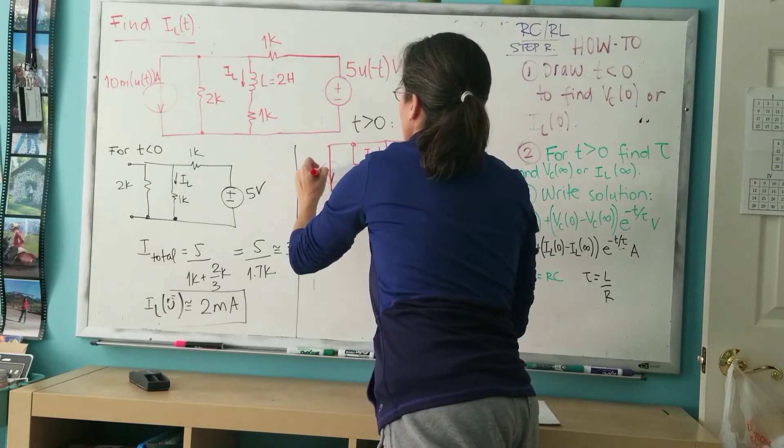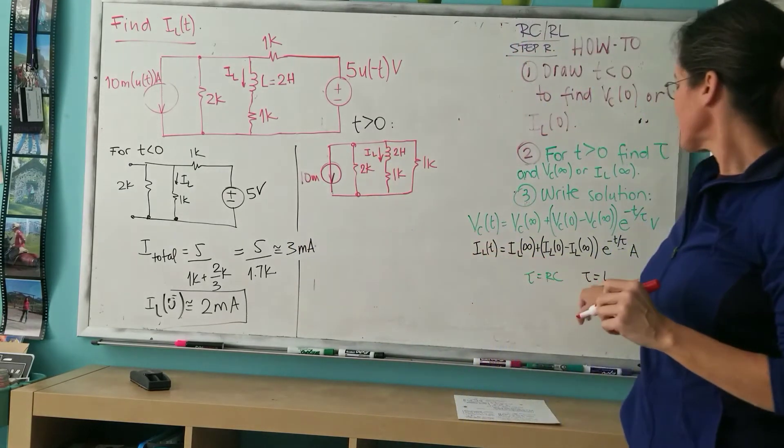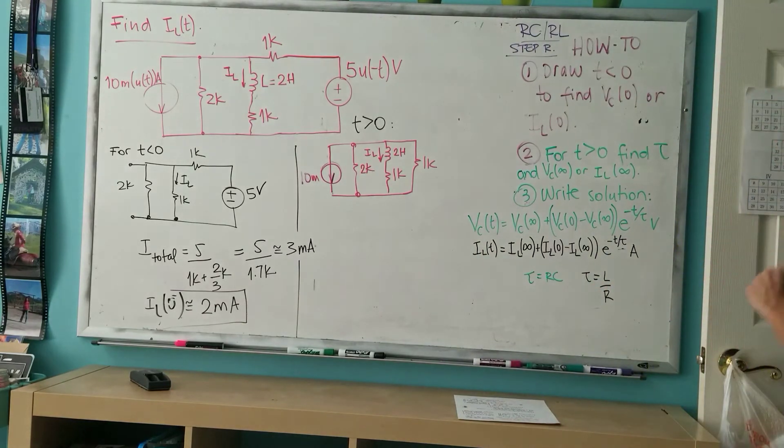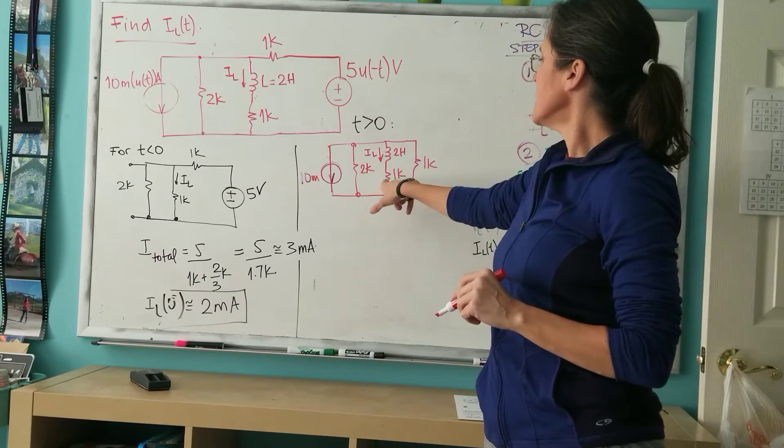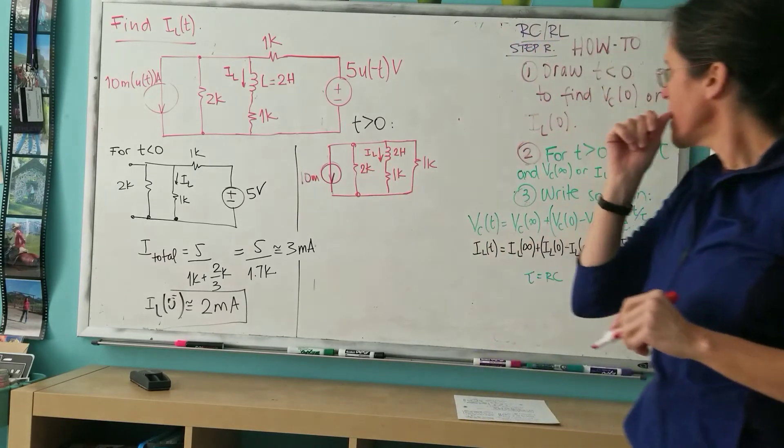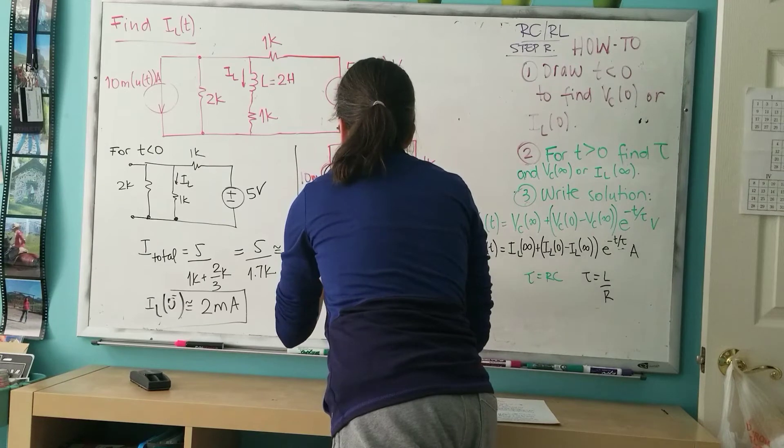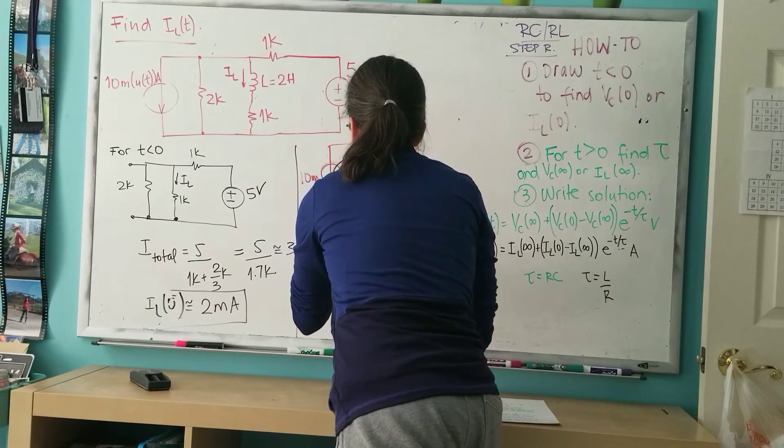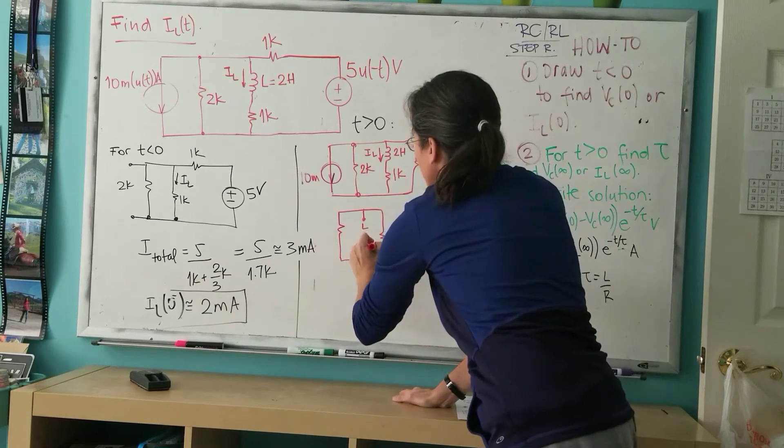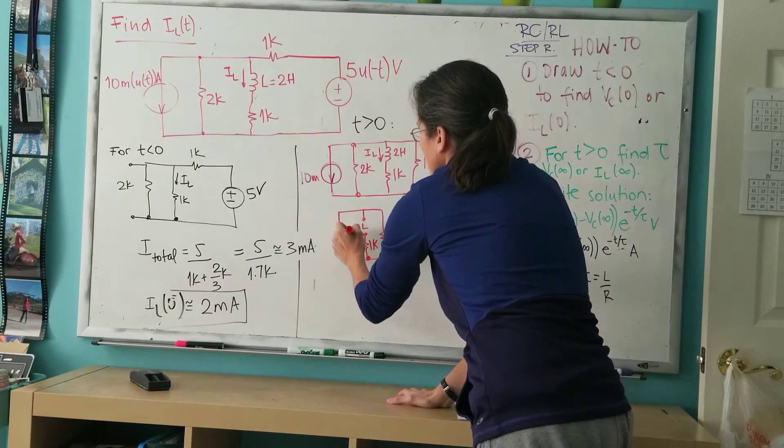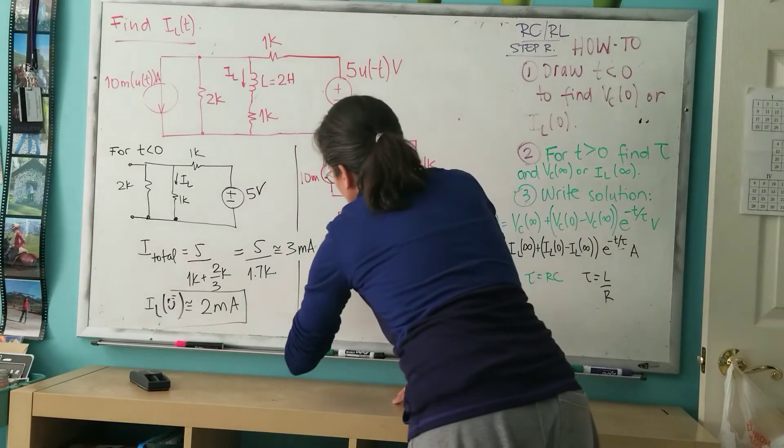Now I'm interested in finding tau, which in the case of this circuit is L over R. So I have L, and the R is what the inductor sees, which is this open, and then 1k in series with... let's draw that. This is the inductor, so this is the L. I'm measuring the impedance or the resistance between these two terminals, which is the 1k in series with the 2k that's in parallel with 1k, which is more or less what we just did. So this R for this particular case I'm going to call 1.7k.